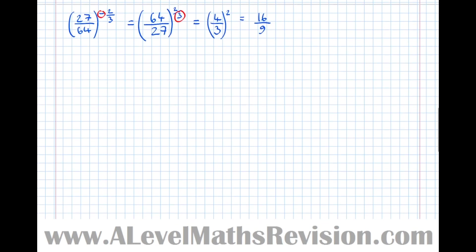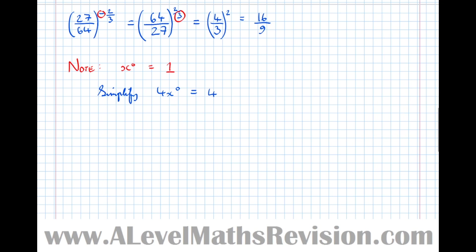One last fact before we finish: x to the power of zero equals 1 — anything to the power of zero is equal to one. An example: simplify 4x to the power of zero. The rules of BIDMAS apply, so we do the index first: x to the power of zero is 1, so this becomes 4 times 1, which is 4. A common wrong answer would be to interpret the whole thing as going to zero, but x to the zero is independent of the 4 — we do x⁰ first, then multiply by 4.